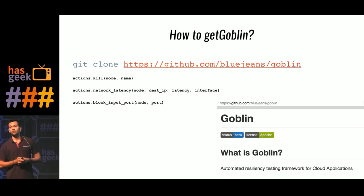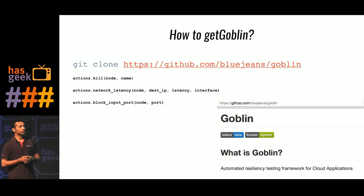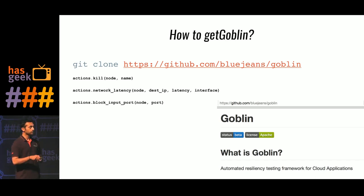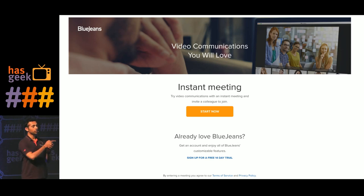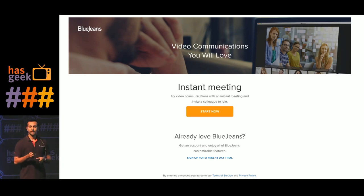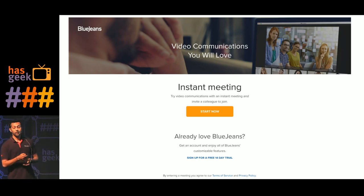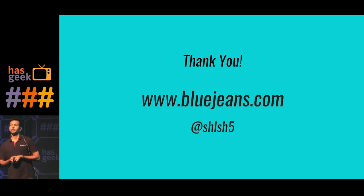This is where you can get Goblin — it's up on GitHub at github.com/bluejeans/goblin. We are definitely looking for contributors; please try it, and give us feedback on what you thought about it. Also please check us out at bluejeans.com. On the homepage there's a Try button that leads you to a page where you can click Start Now to get into an instant meeting. You can share that URL with a friend or a colleague and have a video conference right there. I hope you enjoy that experience.